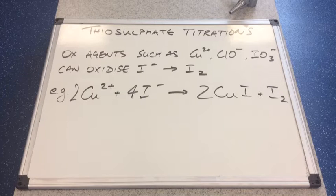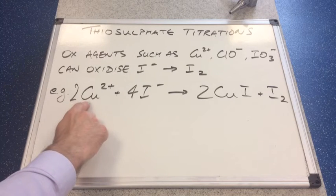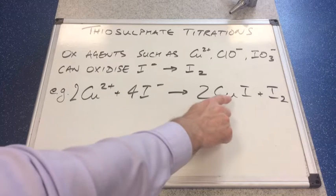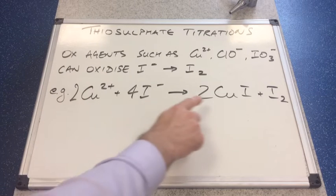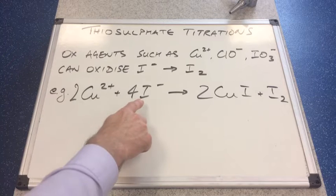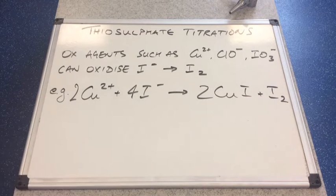I've got an example involving the Cu2+ ion. You can see in the equation that the Cu2+ ions are converted into CuI — that's copper(I) iodide. So the Cu2+ has been reduced to Cu+ in there, and in turn the iodide ions are oxidised to iodine.